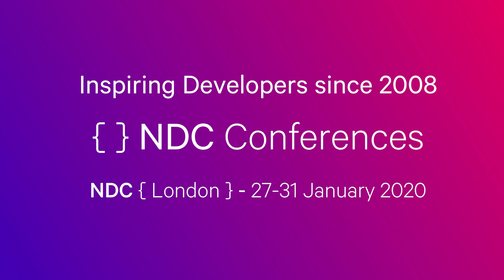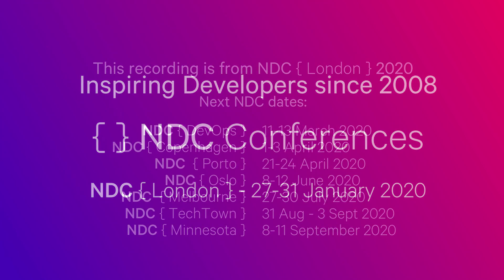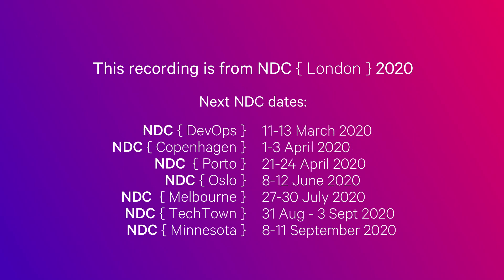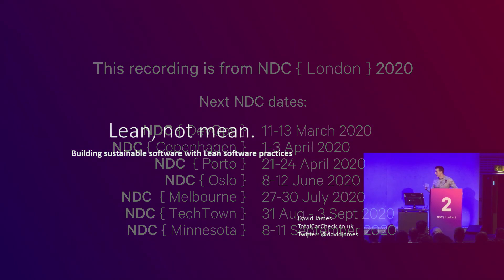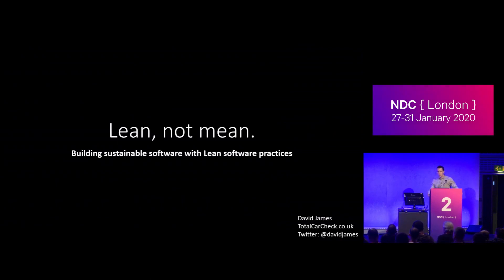Good afternoon. My name is David James. I'm here to talk to you about lean software development. If you want to catch me on Twitter, that's my handle. A little bit about me — I currently work where I founded TotalCarCheck.co.uk. It's a company that helps people find the history of a vehicle before they go to buy it. I'll tell you a bit more about that right at the end.